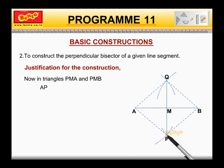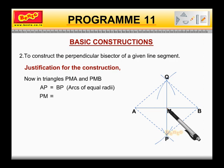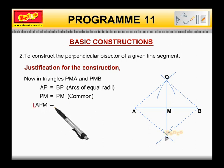AP is equal to BP. That is, arcs of equal radii. PM is equal to PM. That is, common. Angle APM is equal to angle BPM, that is proved above.